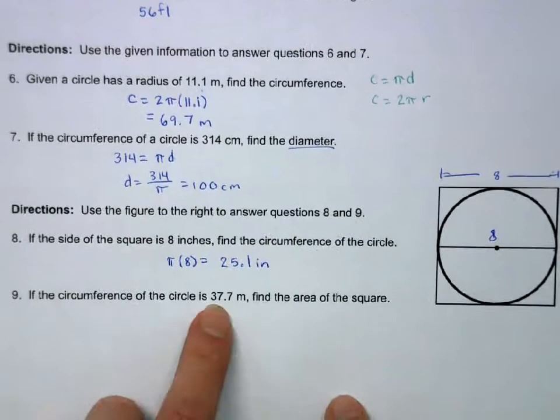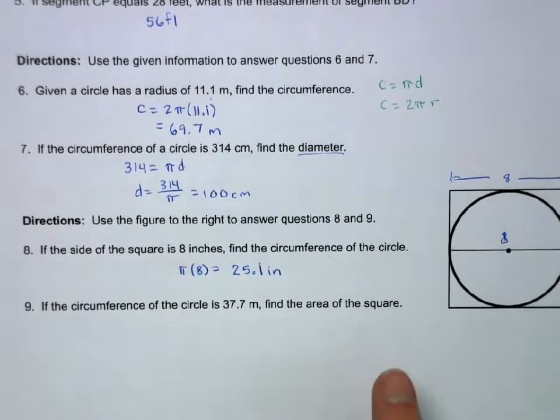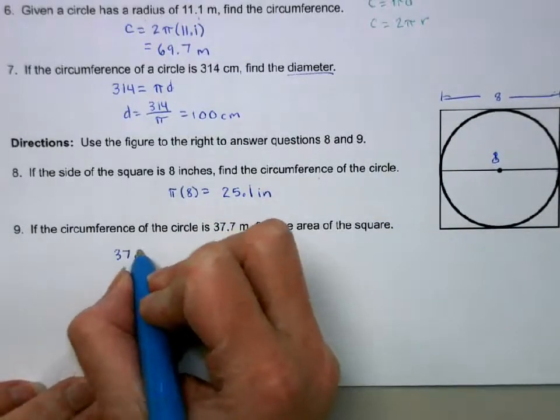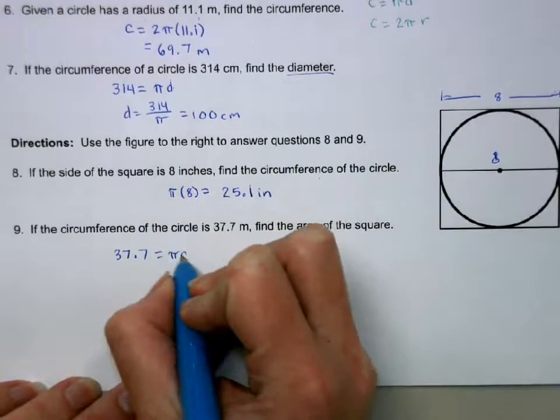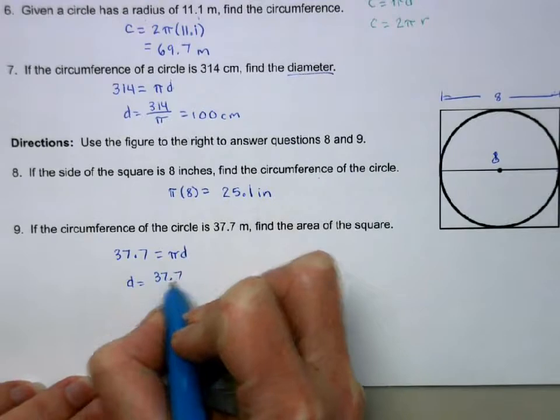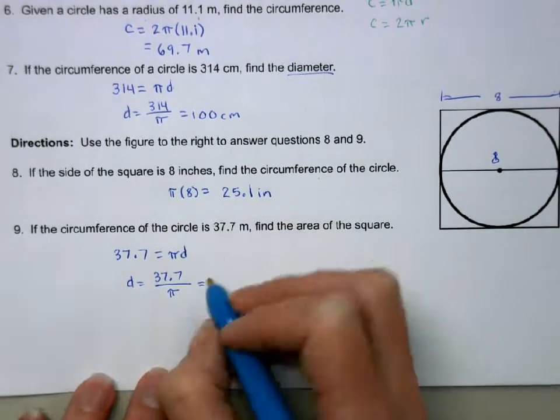Okay, and then if the circumference of the circle is 37.7, find the area of the square. Okay, so I'll set 37.7 equal to pi d. So the diameter is going to be 37.7 divided by pi, which gives us 12.